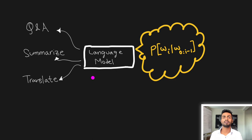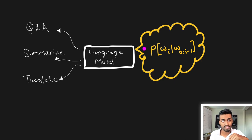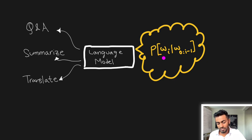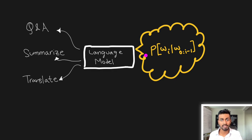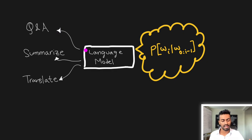Language models have some inherent understanding of language in a mathematical sense — specifically, they understand a probability distribution of a sequence of words. Given some context or words that have preceded it, these language models can determine what is the most appropriate word or token to generate next. Depending on the training data and architecture, we can get different probability distributions, enabling tasks like question answering, text summarization, and language translation.